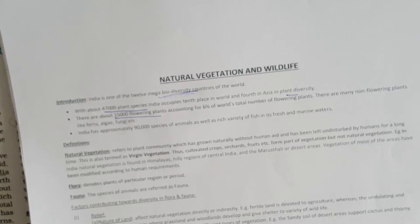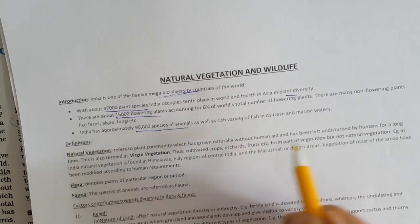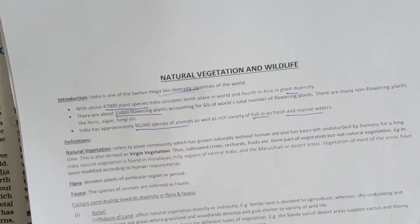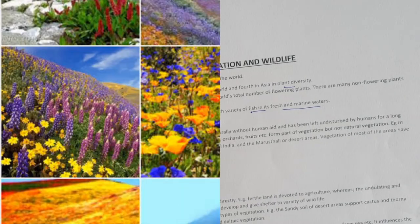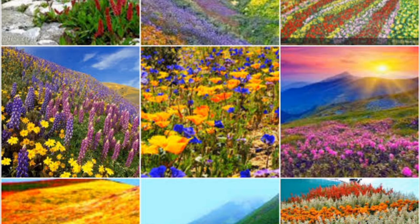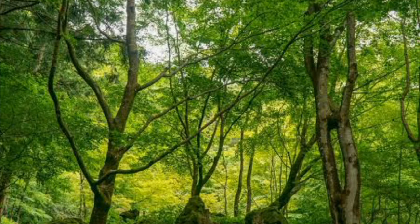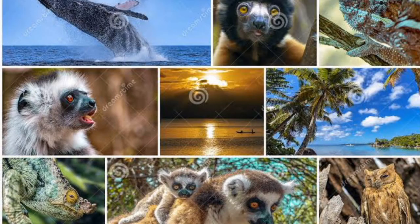India has approximately 90,000 species of animals as well as a rich variety of fish in its fresh and marine waters. Now for the definitions of some commonly used terms: Natural vegetation or virgin vegetation refers to a plant community or group of plants which grow naturally without any human intervention. Thus any cultivated crop, orchards, fruits, etc. form part of vegetation but not natural vegetation. For example, in India, natural vegetation is found in the Himalayas, hilly regions of central India, and Marusthali or desert areas. The term flora is used to refer to plants of a particular region or period. The term fauna denotes animals of a particular region, habitat or geological period.